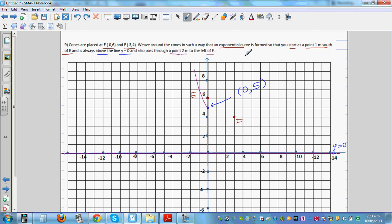You also pass through a point 2 meters to the left of F. So 2 meters to the left of F, the coordinate of this point is 1 comma 4. So the sketch of the graph would look like this, and we want to write the equation of this exponential or decay curve.